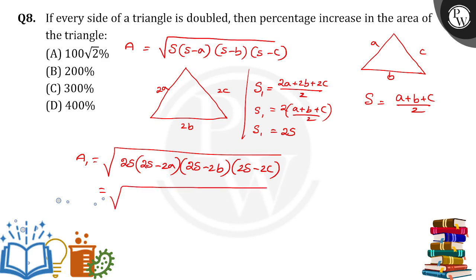If I take 2 common from the bracket values, we will get 2 into 2 into 2 into 2, which is 16. That is equal to 16 times S into S minus A into S minus B into S minus C.